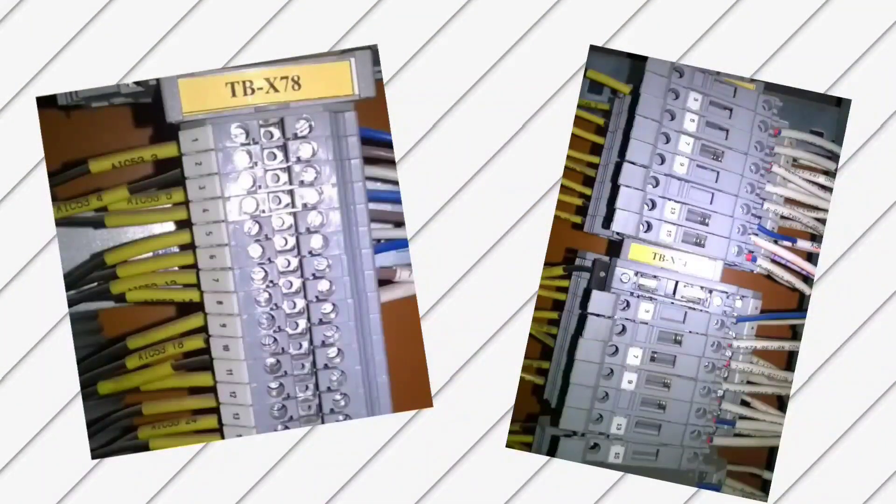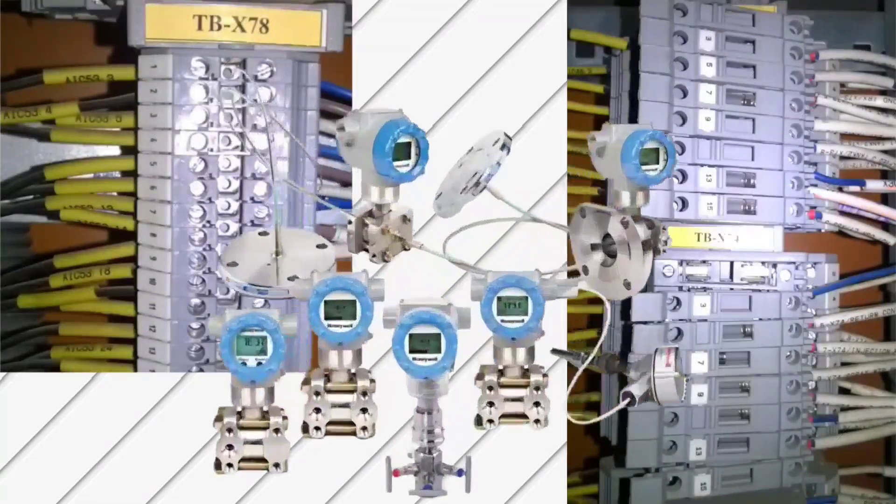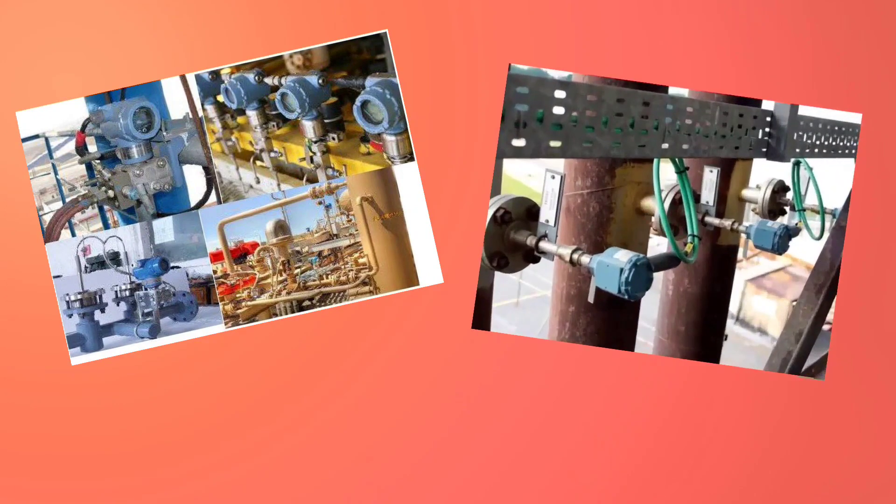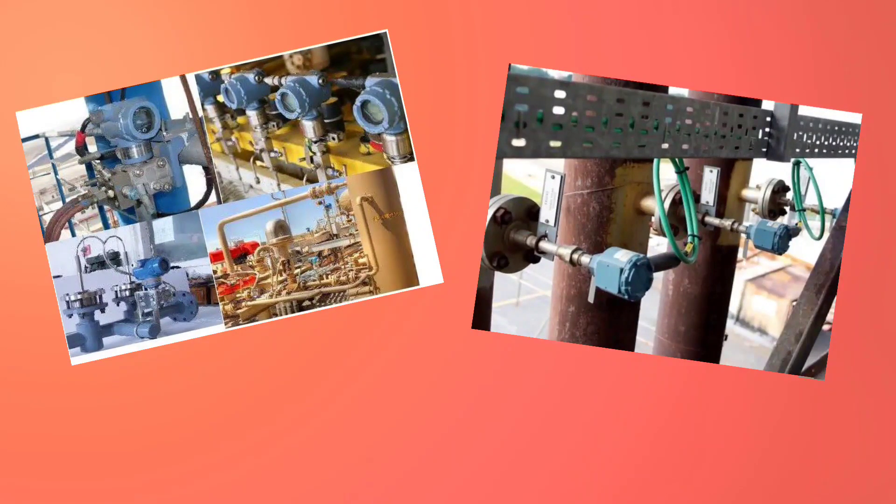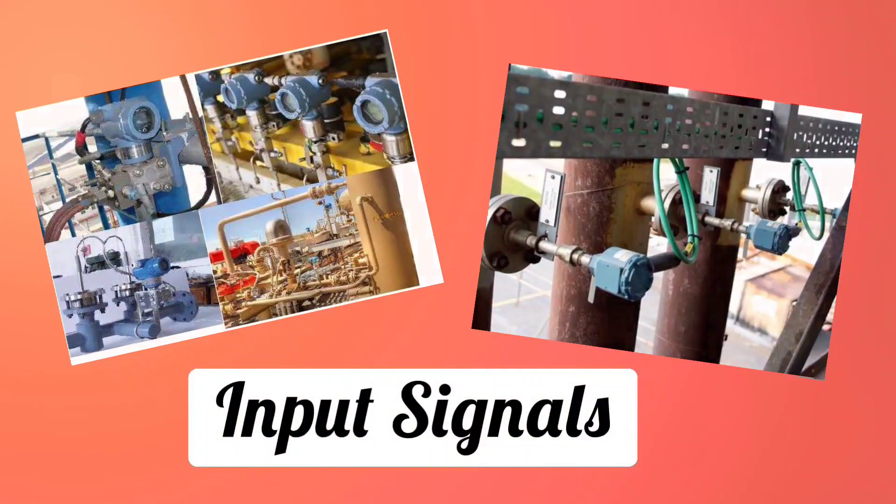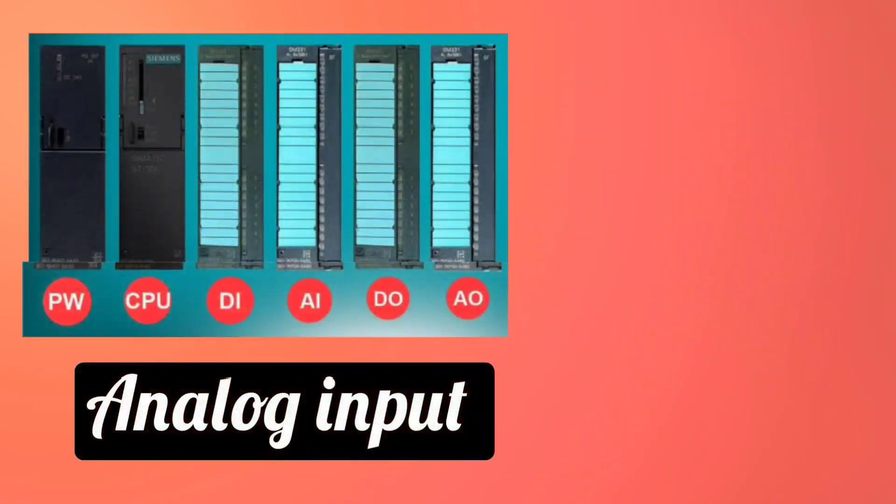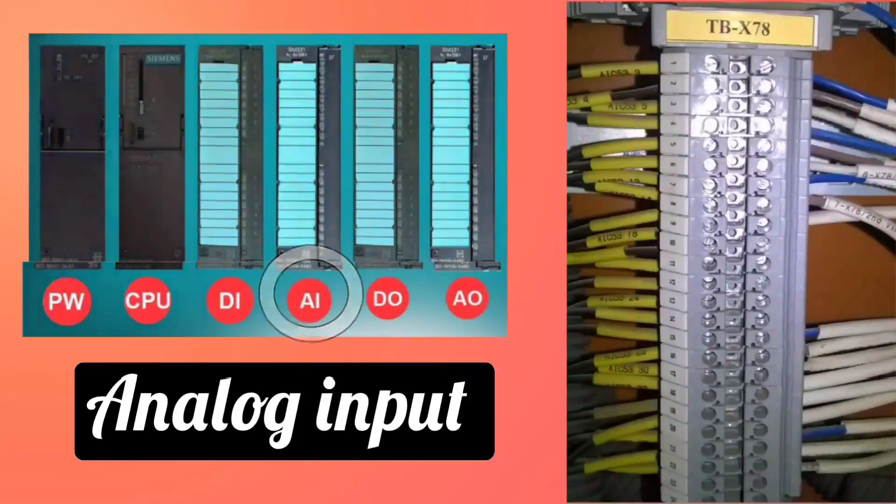TB means terminal blocks. From TB, field instruments are connected. Because transmitters, RTDs, thermocouples are input signals. In PLC panel, these are connected to analog input, meaning AITBs.